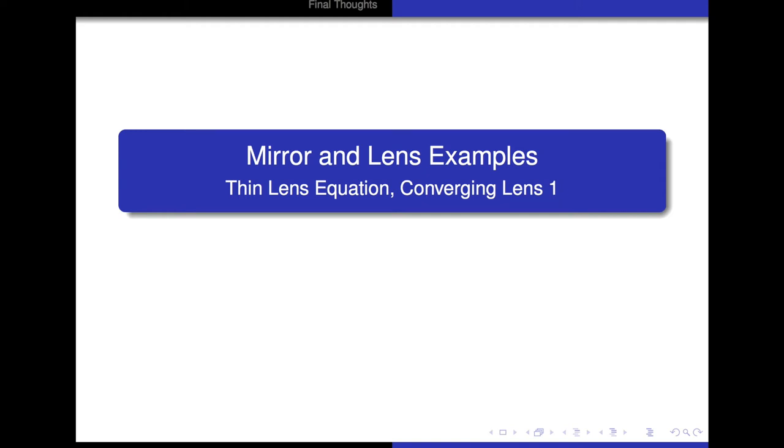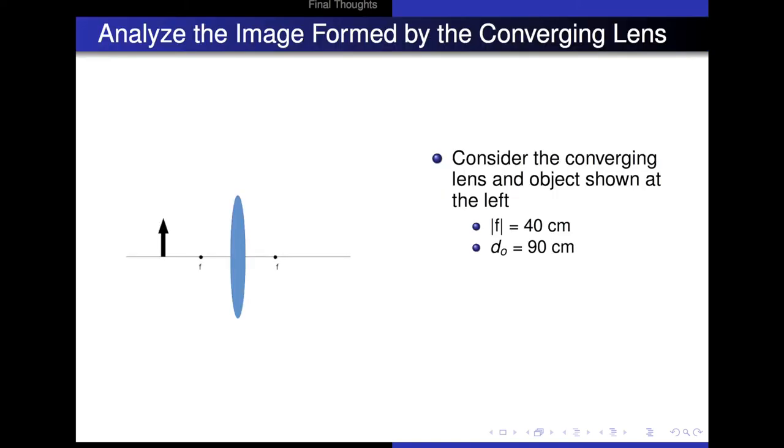All right, in this example, we're going to look at a converging lens. Consider the converging lens and object shown at the left. The blue ellipse is my lens. The black arrow pointing up is the object. It's an arrow, so we know its orientation. I tell you that the focal length has a magnitude of 40 centimeters, and the object distance is 90 centimeters.